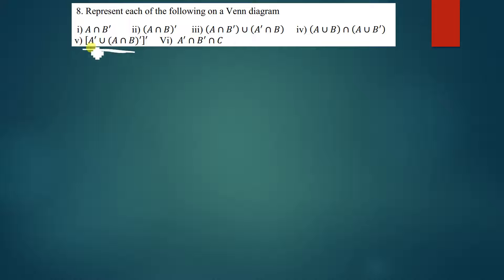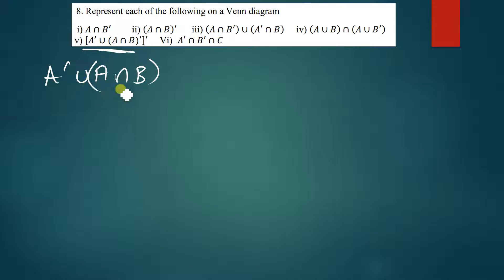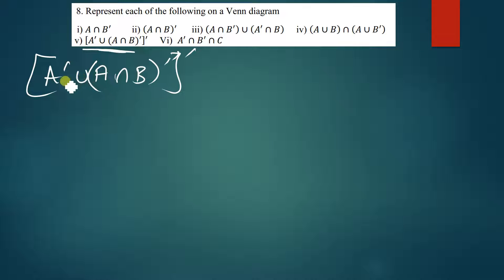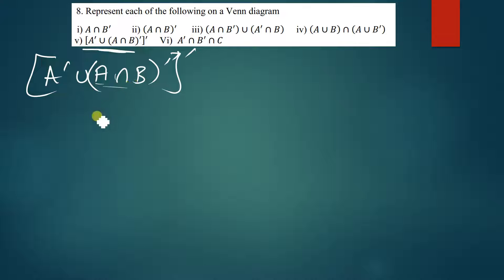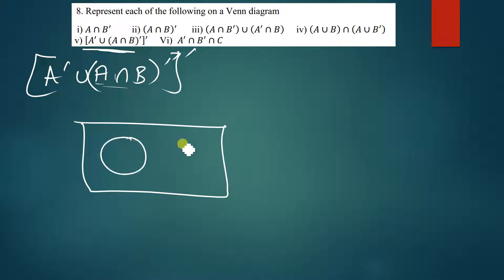Moving on to the second-to-last part: we have (A complement union (A intersection B)) complement — with another complement outside. The first thing to do is shade what is in the brackets, so let's draw the Venn diagram with A and B.